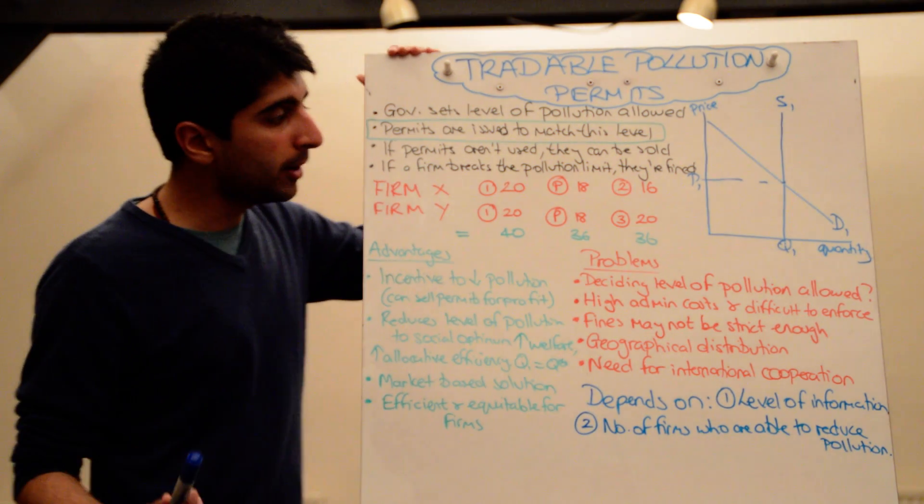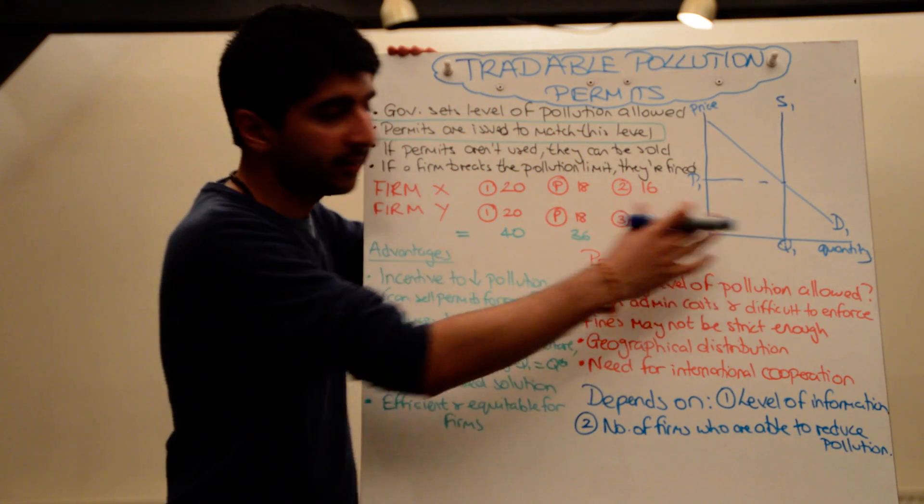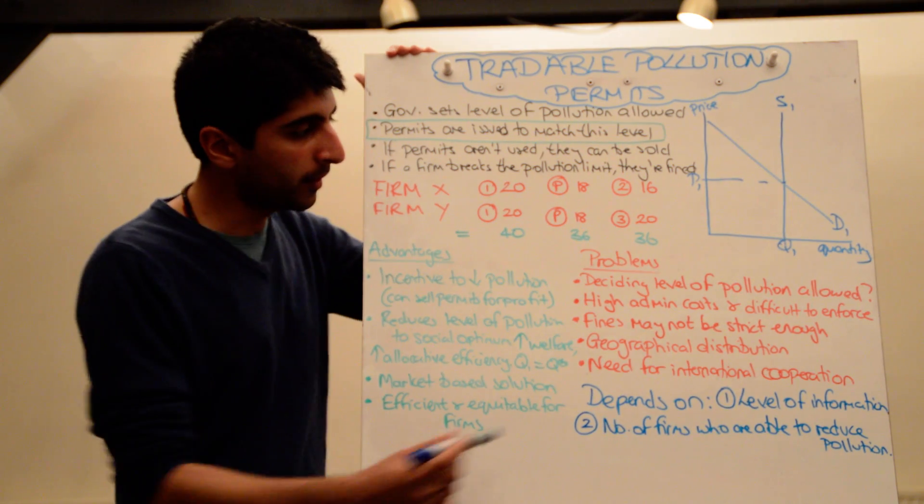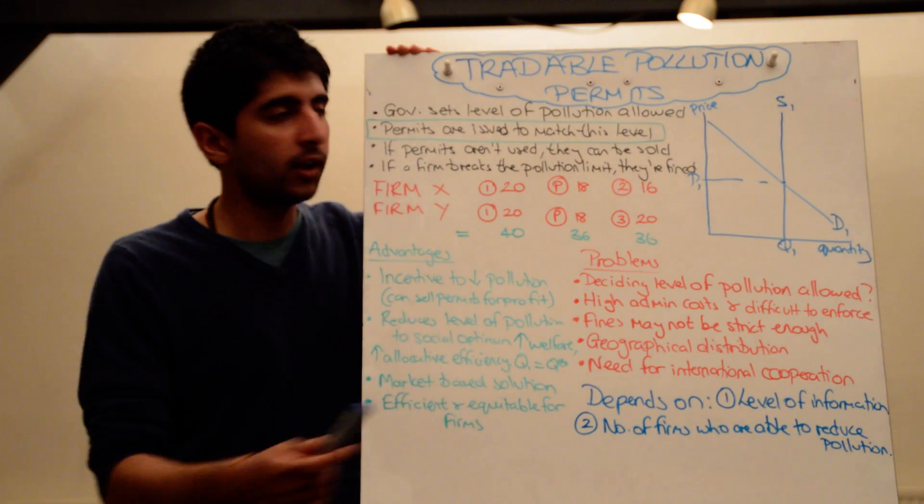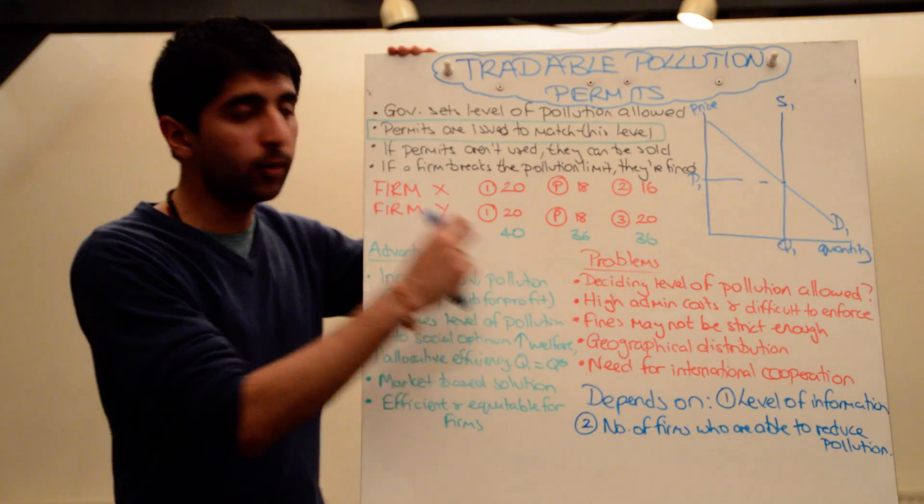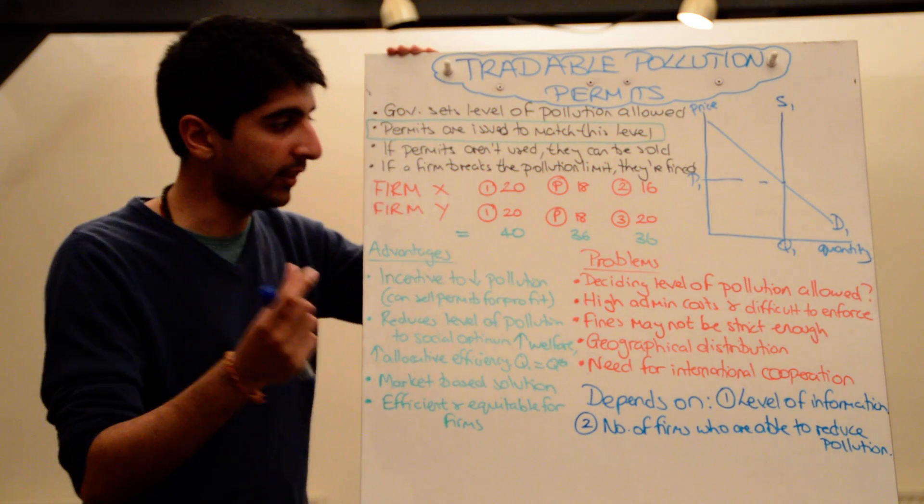There are very high administration costs with implementing a policy like this. It costs a lot of money to actually distribute permits, to allocate permits, and to enforce permits. You've got to make sure that you're enforcing it, that firms aren't getting away with polluting too much. That's costly, the cost of enforcement.